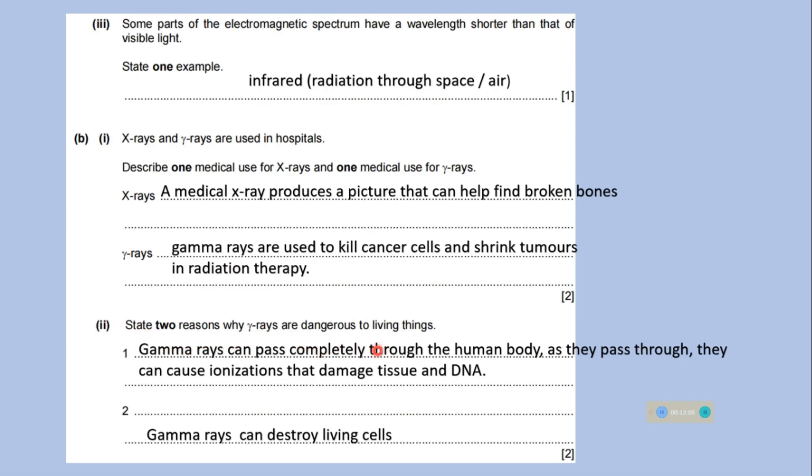State two reasons why gamma rays are dangerous to living things. Gamma rays can pass completely through the human body. As they pass through, they can cause ionization that damage tissues and DNA, and gamma rays can destroy living cells.